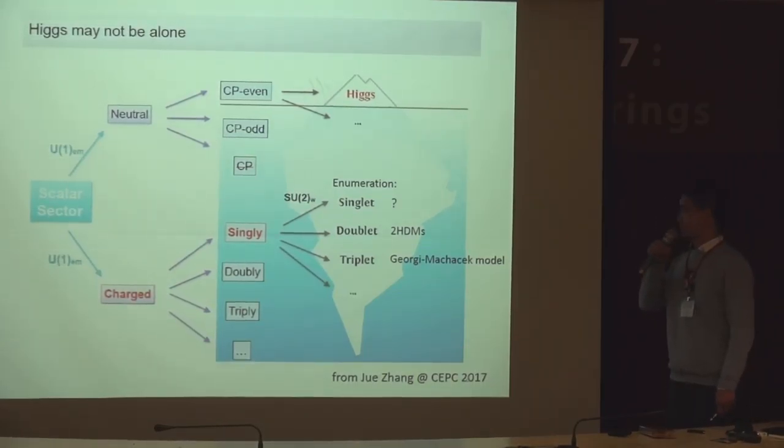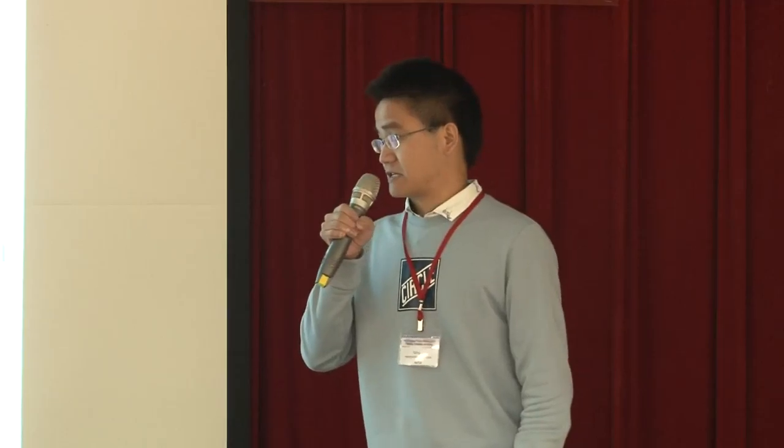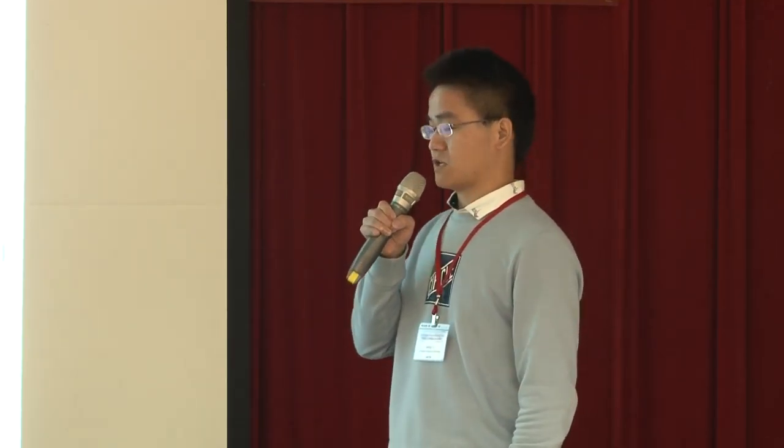When we consider the SU2 quantum number, it may come from the electroweak symmetry breaking of SU2 singlet, doublet, or triplet. For the last two cases, the doublet and triplet have been studied in the type-2 Higgs doublet model and the Georgi-Machacek model. While the simplest case, the SU2 singlet charged Higgs scalar had not been studied. And this is the main focus of my talk.